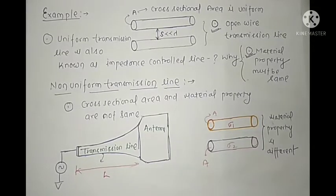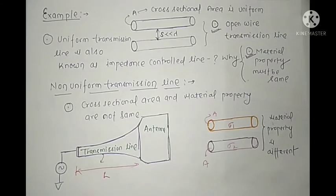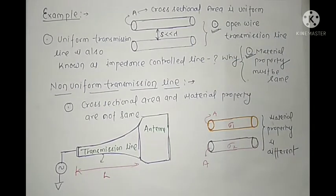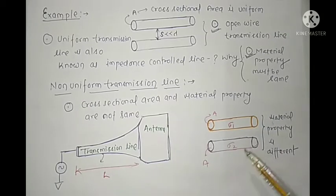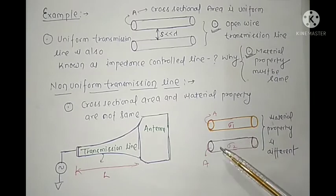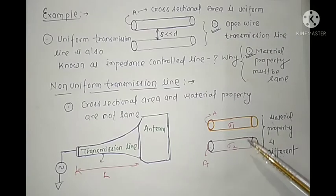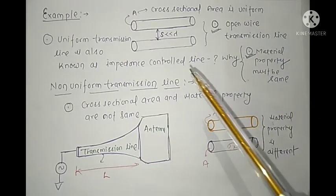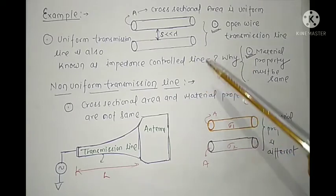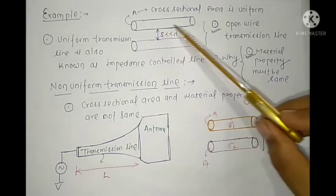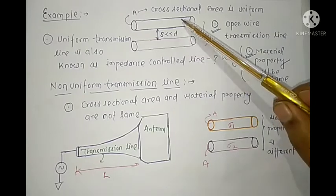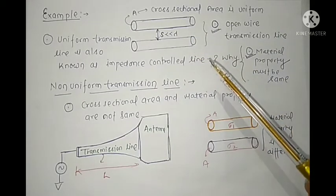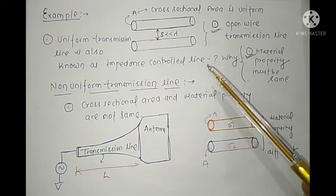This is the second lecture about uniform transmission lines. In the last class, we discussed what a transmission line is — a guiding structure or two-or-more conductor system that guides signals or energy from source to destination. Now let's modify the definition of uniform transmission line: if the cross-sectional area is the same along the length, we call it a uniform transmission line.